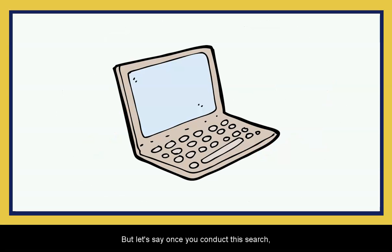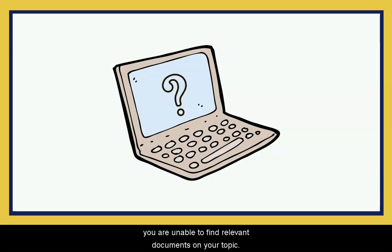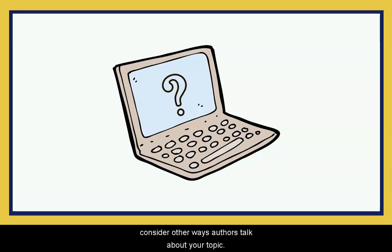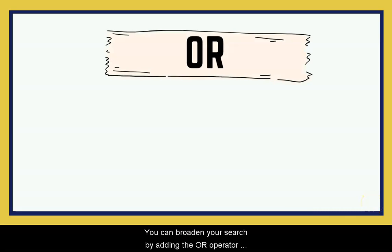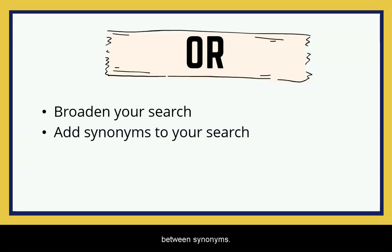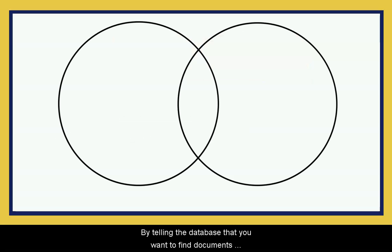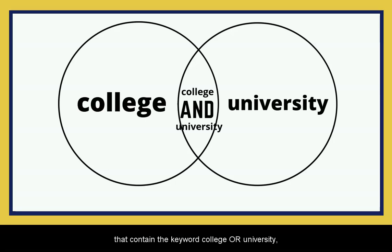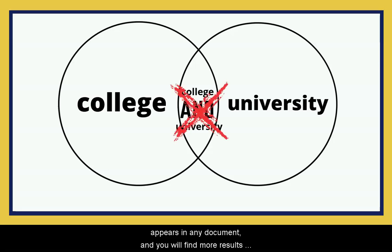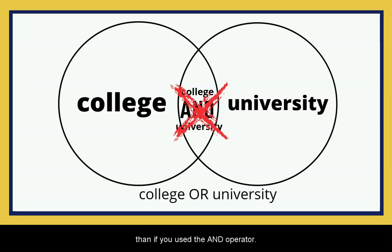But let's say once you conduct this search, you are unable to find relevant documents on your topic. Using synonyms of your keywords is a great way to consider other ways authors talk about your topic. You can broaden your search by adding the OR operator between synonyms. By telling the database that you want to find documents that contain the keyword college or university, you are searching for whenever either word appears in any document, and you will find more results than if you use the AND operator.